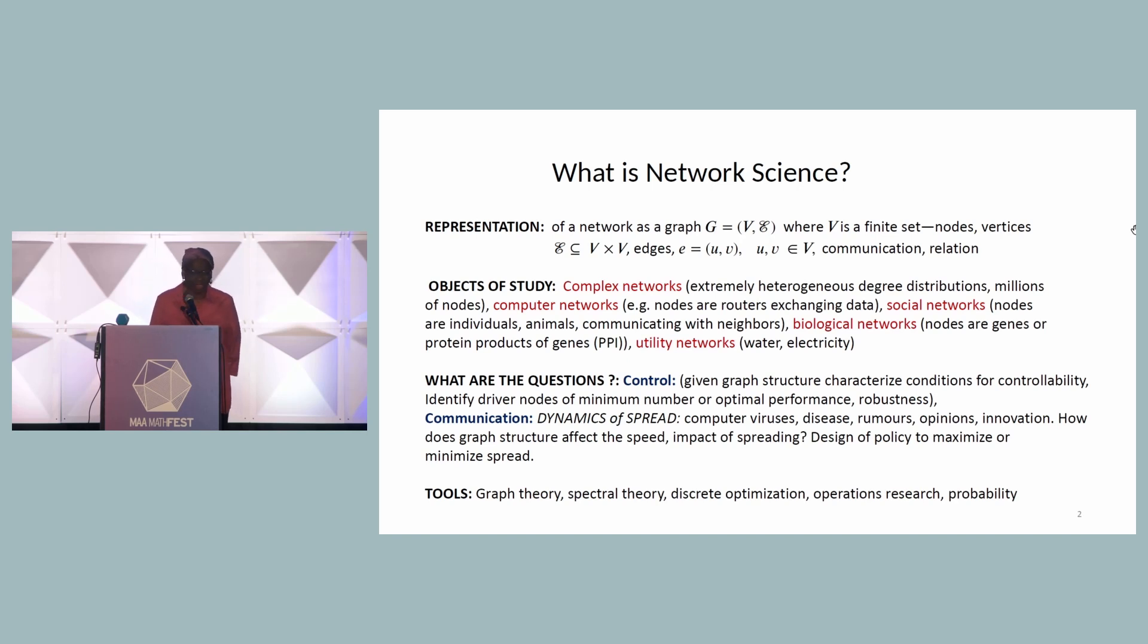The objects of study are actual networks, which can vary from millions of agents, as in a social network. Or we can be talking about biological networks, where the agents are represented as nodes that represent biological organisms, for example, or they may represent genes and proteins. And then, on a much smaller scale, but very important utility networks for water and electricity.